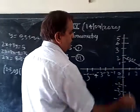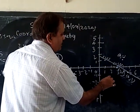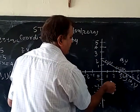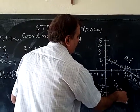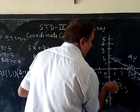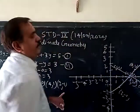Next is (2, -1). This is the point. Now take the scale and join with the help of scale. Again, I am telling you. When you will use the scale and pencil, you will get the exact value.